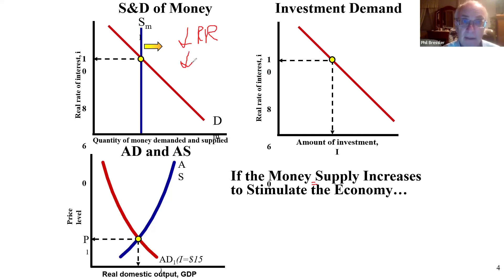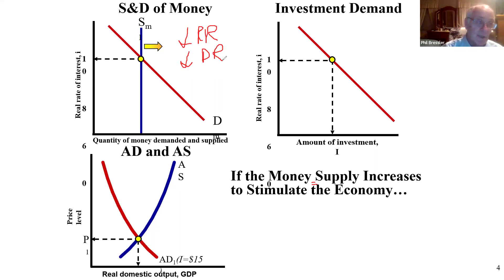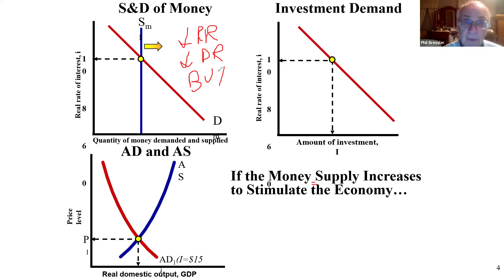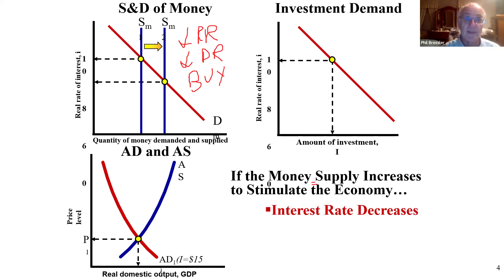Lower the discount rate — that's lower interest. The discount rate is the rate that the Fed lends to banks. So lower interest means the banks are going to borrow more money and money supply will increase. If you buy bonds, the economy booms. All three of these are going to shift money supply to the right.